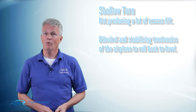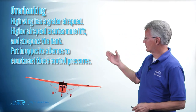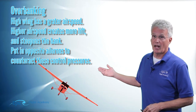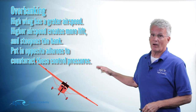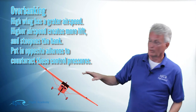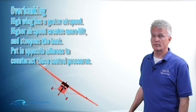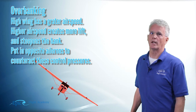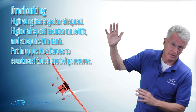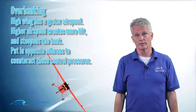Now, over-banking tendency is when I have a steep bank on the aircraft and the high wing now has a greater airspeed through the air than that low wing does. That greater airspeed causes that high wing to create more lift and actually steepen the bank — we call it over-banking.